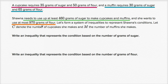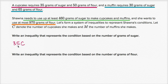The condition based on the number of grams of sugar: Shauna needs to use up at least 460 grams of sugar to make cupcakes and muffins. So how much sugar is she going to use for the cupcakes? She requires 35 grams of sugar per cupcake, so the total sugar for cupcakes is 35 grams per cupcake times the number of cupcakes — 35C.